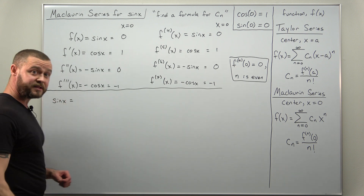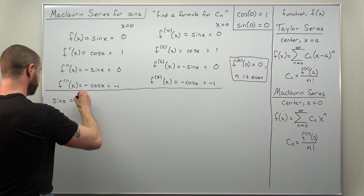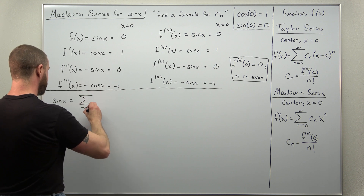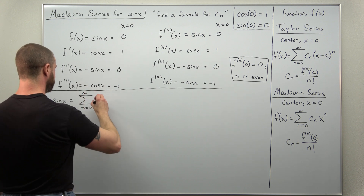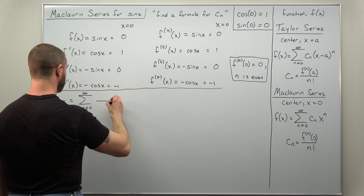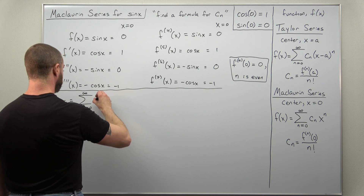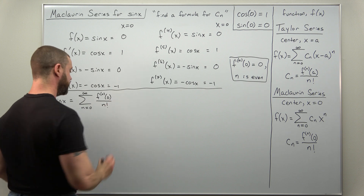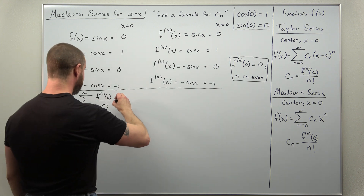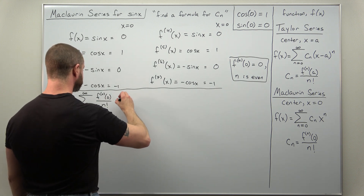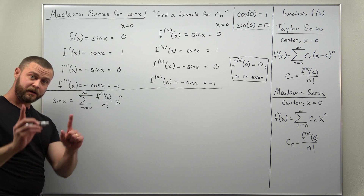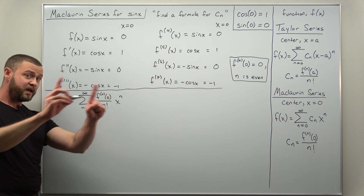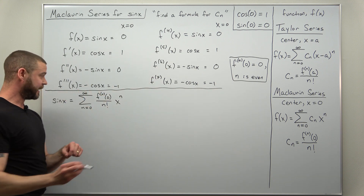That means in our general version of a Maclaurin series, half the coefficients evaluate to zero. To get the formula in summation notation for the Maclaurin series of sine of x, we're going to split this sum over even values for n and odd values for n. So let's go ahead and write down the general Maclaurin series: we have this going from n equals zero to infinity of the nth derivative evaluated at zero divided by n factorial times x to the n.